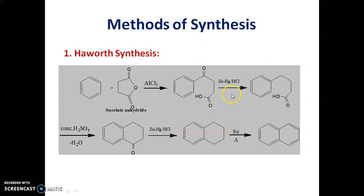it undergoes Clemmensen reduction in presence of Zn-Hg to give 4-phenylbutanoic acid. This 4-phenylbutanoic acid is further cyclized in presence of concentrated H2SO4 to get tetralone. This tetralone on further Clemmensen reduction followed by selenium dehydrogenation gives naphthalene. This is the first method for synthesis of naphthalene which is called as Haworth synthesis.